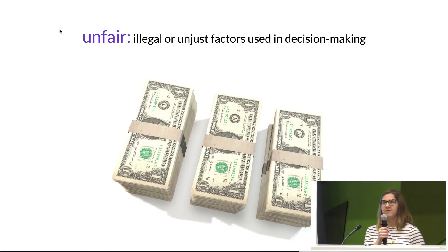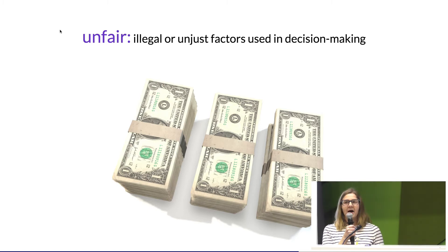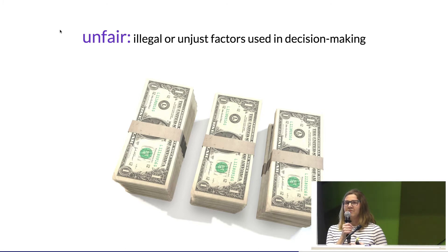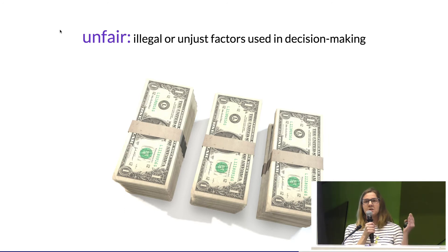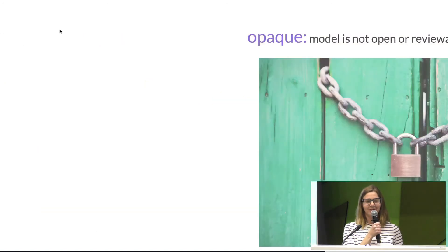Number two is fairness: are there illegal or unjust factors used in decision-making? Back to the sentencing example — there's a questionnaire people fill out with questions like, 'Do you have a family member with a criminal record?' That determines sentencing based not on your own actions, but on things you can't change, like who your family is. That's another indicator you're entering nefarious model territory.